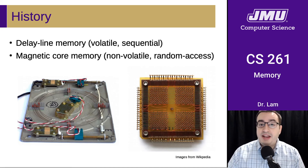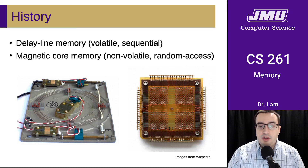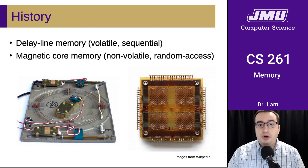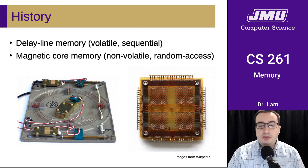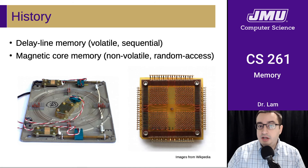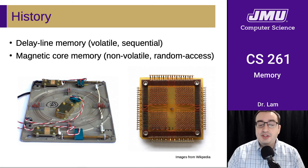There's also magnetic core memory, which was used in computers for a while. This uses small metal pieces that are magnetically charged in two different directions, and that's how you would store a bit — zero or one — based on the magnetic charge. We don't really use either of these anymore, although you can still see references to them. For instance, whenever there is a debug dump of data from memory, it's relatively common to refer to it as a core dump, even though it's not using magnetic core memory anymore.